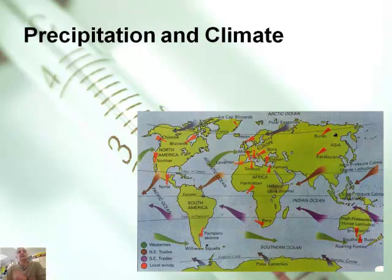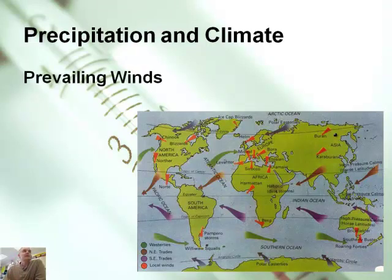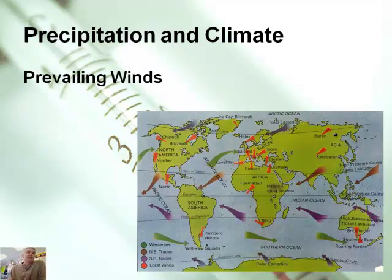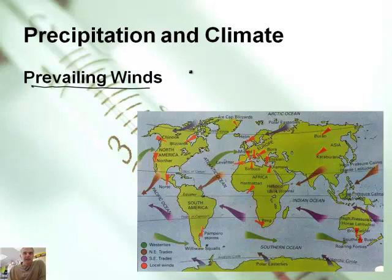Let's talk about precipitation. This is important: what causes certain places to be moist and some to be dry. It has to do with prevailing winds, and these are caused by the Coriolis effect that we talked about in a previous podcast.